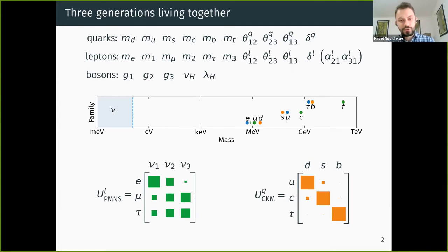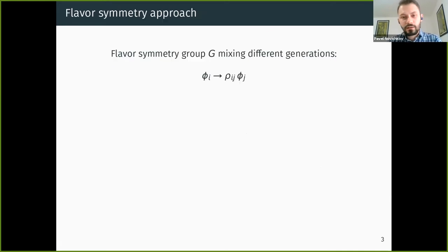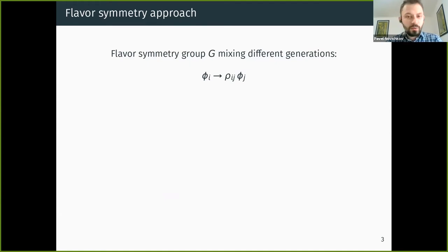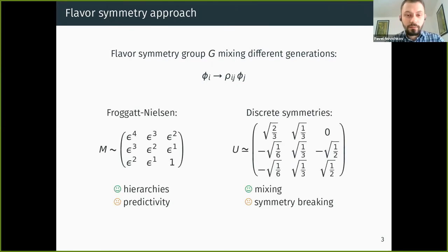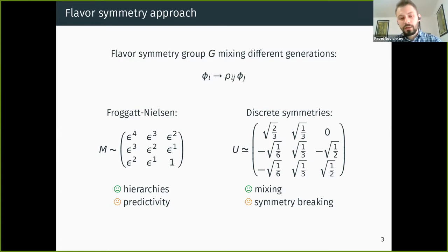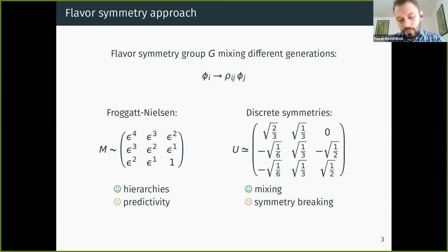Probably the most natural approach to resolve this issue, given these almost symmetric patterns and the similarity of different generations, is the symmetry approach: one introduces a new symmetry group G called the flavor symmetry which mixes different generations. Two famous examples: the Froggatt-Nielsen approach imposes a U(1) symmetry with different generations having different charges, coupling to a scalar field at different powers, which produces a hierarchical mass matrix. This nicely explains hierarchies but lacks predictive power, since there is an undetermined order-one parameter in front of each entry.